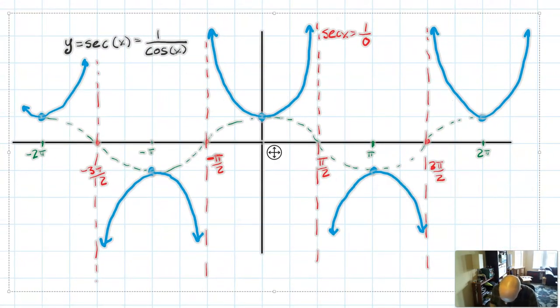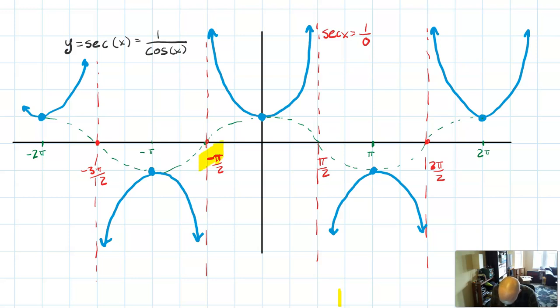So these are phase shifts of each other. And what that means is that the two functions have different asymptotes. Secant of x has asymptotes on the pi over two values.